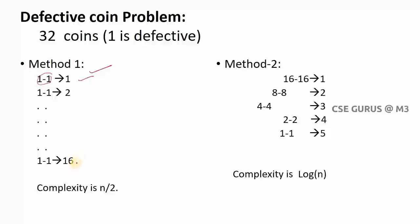If you take 64 coins, you check 32 times. If you take 128 coins, you check 64 times. So for any number of coins, the complexity of method one is n/2.